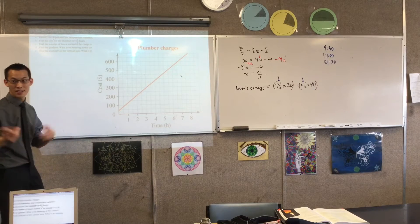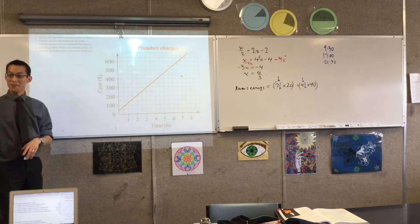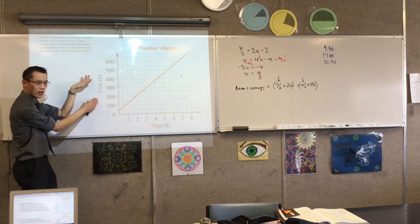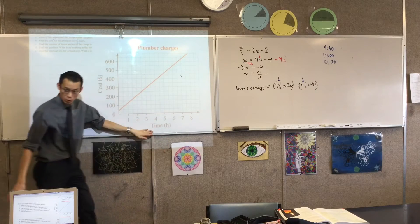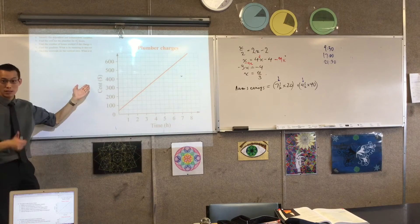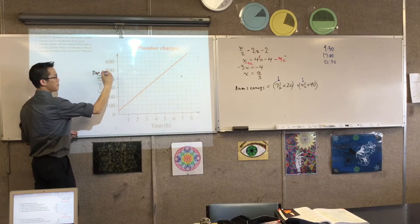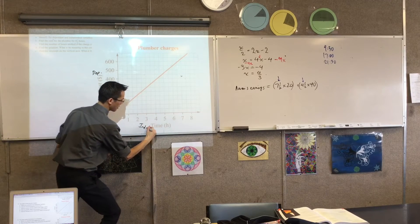What do dependent and independent mean? In this context. Yeah, right. Very good. Like, that's what dependent means. Yeah, that's right. So, cost is the one that depends on time. You spend more time, you'll have to pay more money. Yeah, does that make sense? So, therefore, I'm going to label this as dependent and independent.